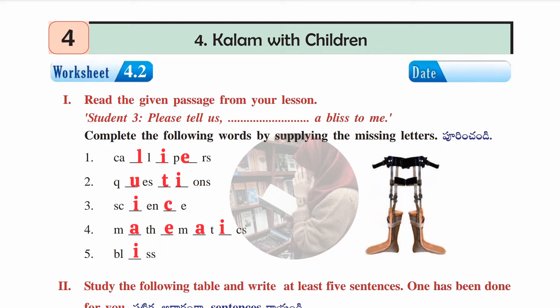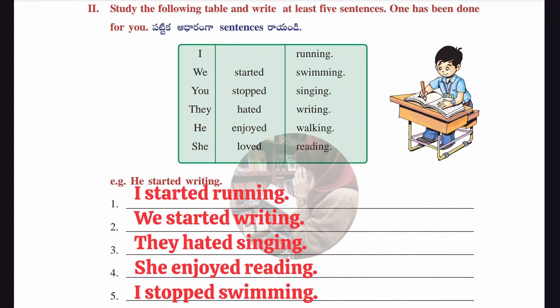The second section of worksheet 4.2: study the following table and write at least five sentences. We pick one word from each column to make meaningful sentences. Example given: he started writing. Our sentences: I started running; we started writing; they hated singing; she enjoyed reading; I stopped swimming.